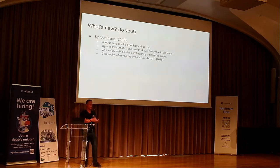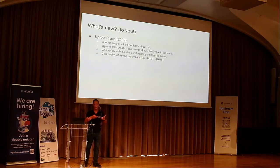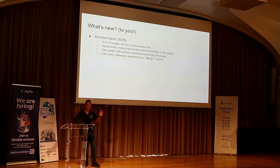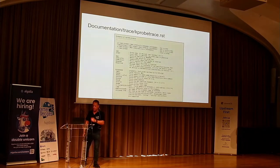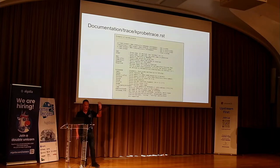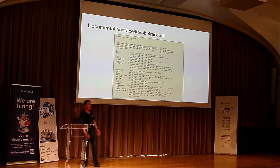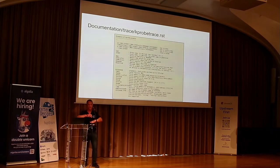Caveat: if you have a structure or something like that, it's just the first register that's used. So if you know how compilers work, sometimes the arguments aren't quite in the right registers, but in most cases they are. They're a little bit complex, so not everyone always uses them. If you go into the documentation directory, things are completely documented in the documentation trace kprobe-trace.rst file.